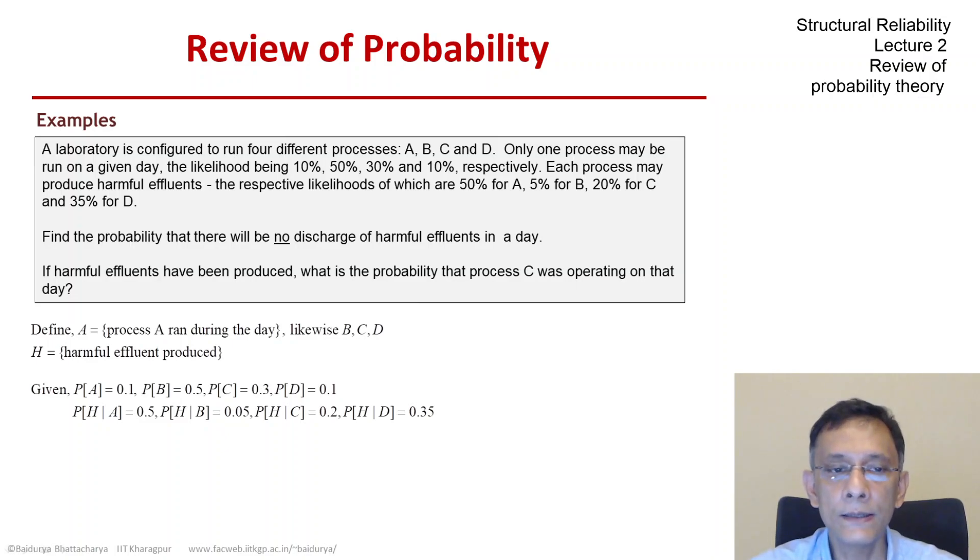So our partition is A, B, C, D and one way to make sure that you got the partition right is that each event's probability in that partition should add up to 1 and that's what you see is happening here.